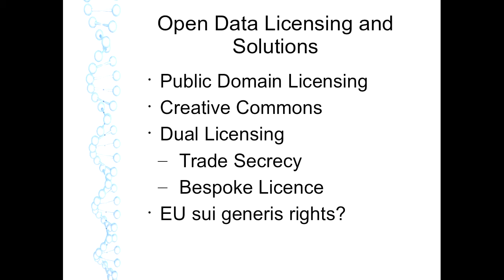One option is to use public domain licensing to release some of the data to the public domain. Creative Commons has been driving a project to create open database licensing. Another option is dual licensing — you may choose to release the software under an open license, but keep the data confidential or use a bespoke license. That may be important in scientific research where, for instance, you have patient data that you may not wish to release under an open source license due to privacy concerns. It's important to remember that there are different rights associated with the software and the data, despite the close linkage between the two.